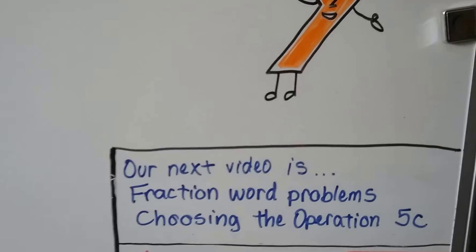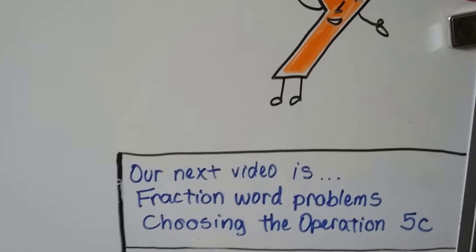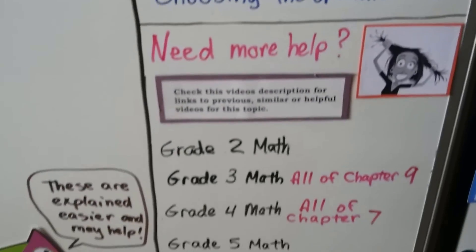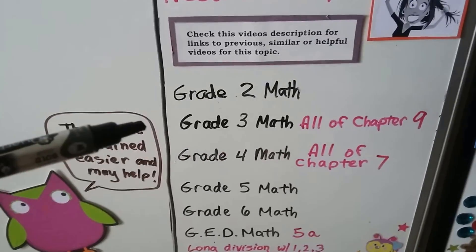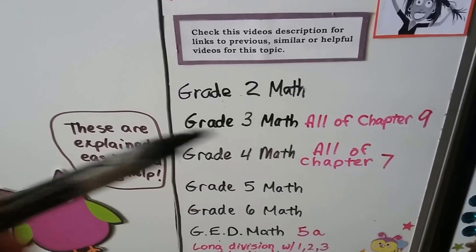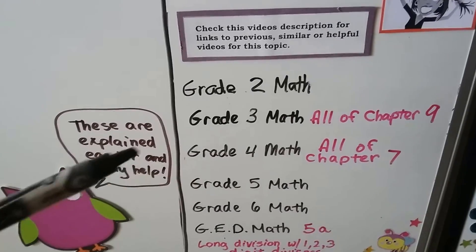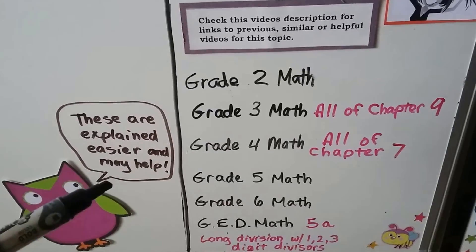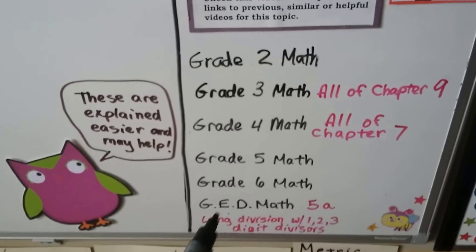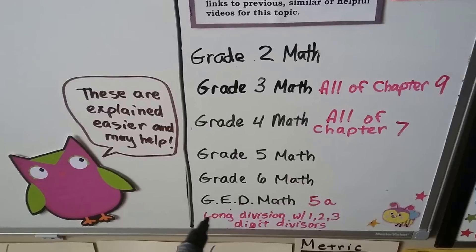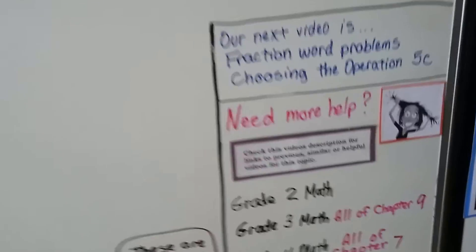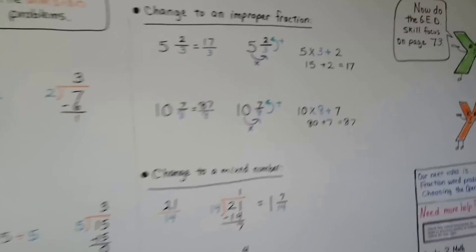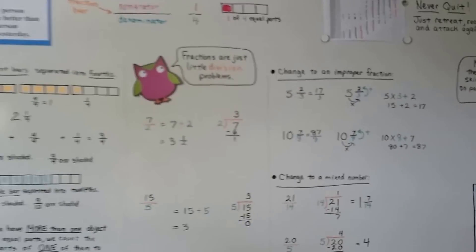Our next video is going to be about fraction word problems and it's choosing the operation lesson 5c. If you have any problems and you need more help there's going to be a link to grade 3 math for chapter 9. It talks all about fractions and equivalent fractions and the grade 4 math all of chapter 7 is going to help you with fractions and equivalent fractions and improper and mixed numbers and the previous video 5a will help you and that link to that long division with one two three digit divisors. So you should be all right. Hit the like button if I've helped you and I'll see you next video.